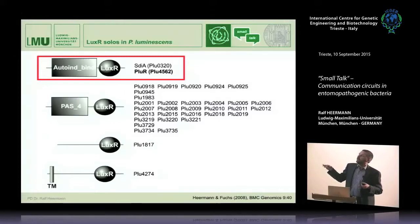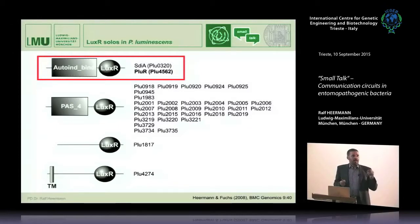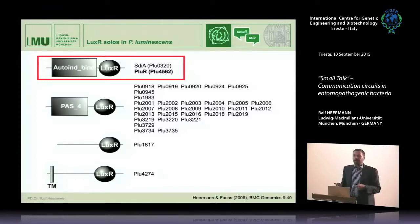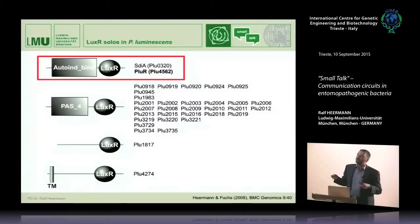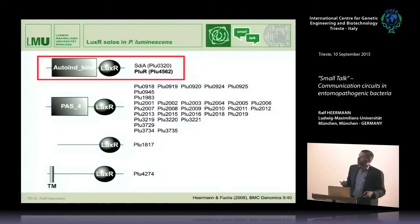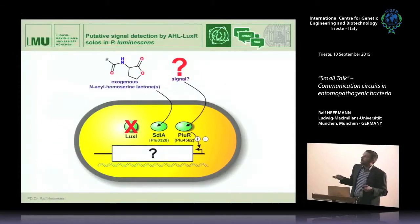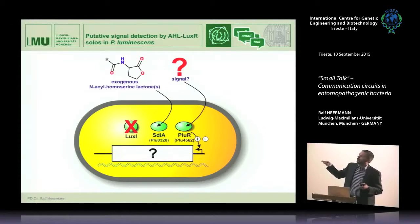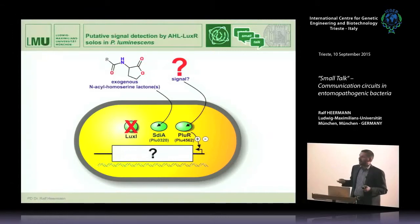When we started, we were interested to see what is actually going on with two of these receptors: SdiA and PLU-R. SdiA is known from E. coli and Salmonella — it's a LUX-R solo that binds exogenous homoserine lactones produced by other bacteria. Therefore we thought it could be similar. We focused on the other receptor, PLU-R, which had no such homology to other known LUX-R solos.